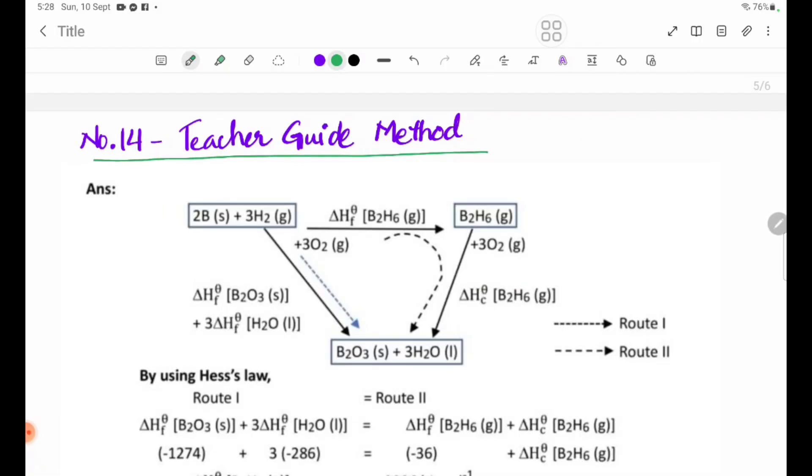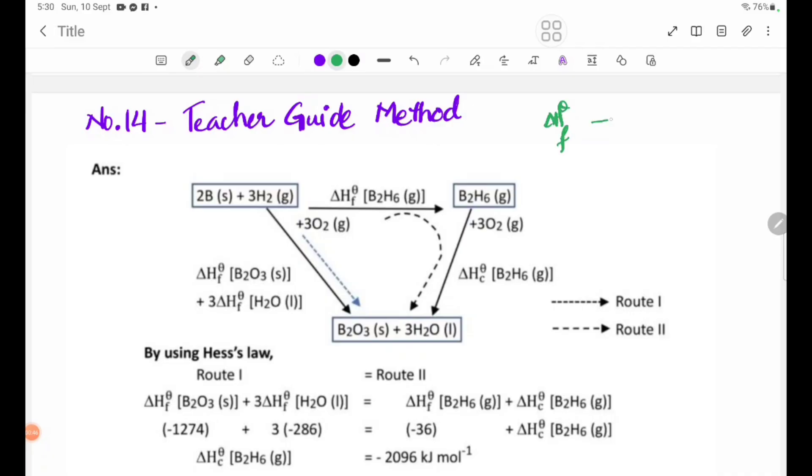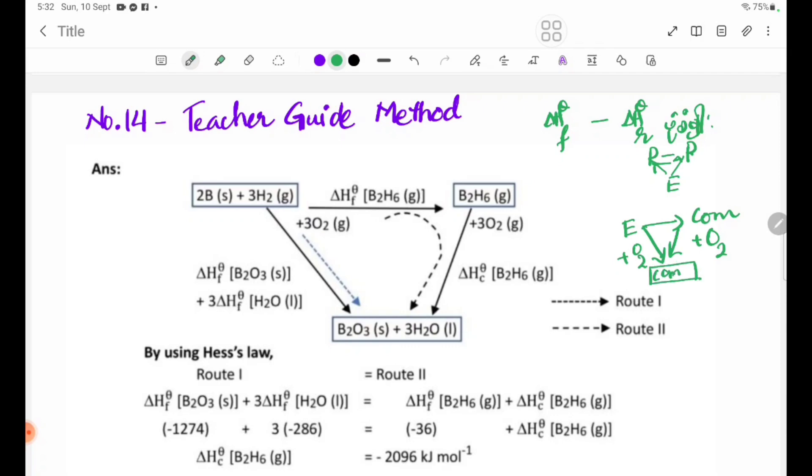From this element, we have to get the combustion products. We need to make the equation for the combustion products. The compound B2H6 includes H2O as part of the combustion.